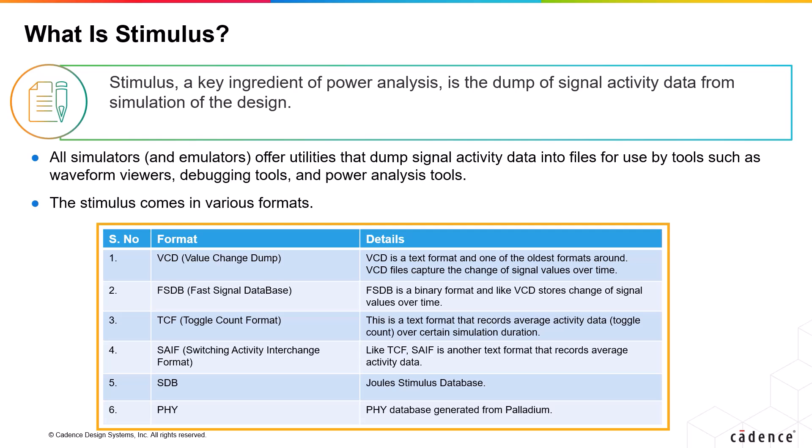TCF is Toggle Count Format. This text format records average activity data — the toggle count over a certain simulation duration. As it saves average toggle data, TCF is very compact. SAIF is the Switching Activity Interchange Format. Like TCF, SAIF is another text format that records average activity data. SDB is Joule's own stimulus database, and there is also a PHY database generated from Palladium.